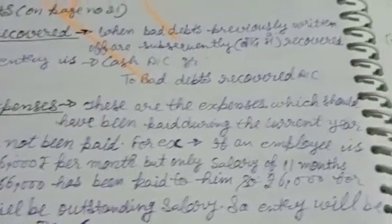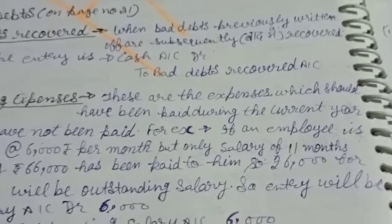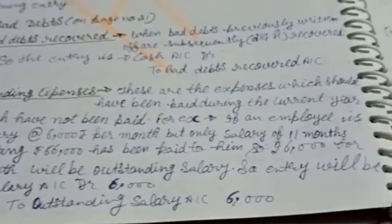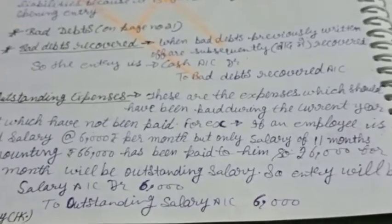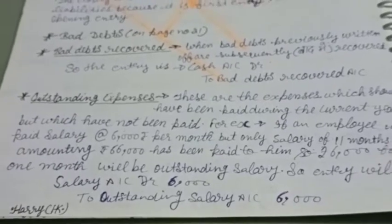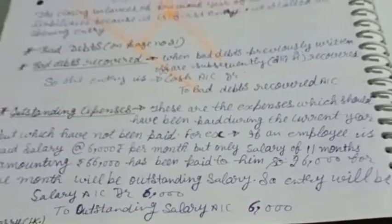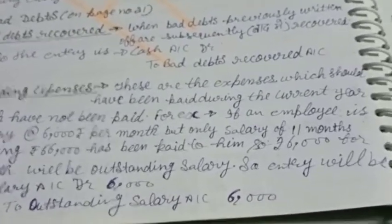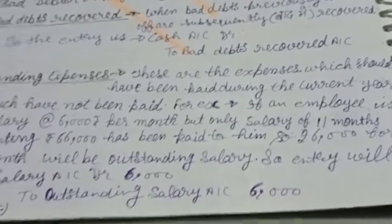Outstanding expenses are expenses which should have been paid during the current year but have not been paid. For example, if an employee is paid a salary of six thousand per month but only eleven months' salary amounting to sixty-six thousand has been paid, the remaining six thousand becomes outstanding salary. The entry will be: Salary Account debit to Outstanding Salary Account six thousand.